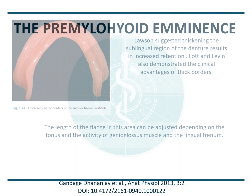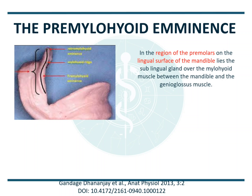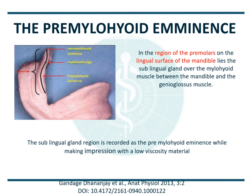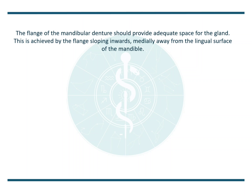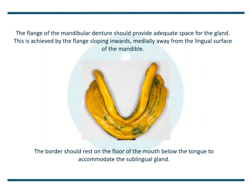Next is the pre-mylohyoid eminence. In the region of the premolars, on the lingual surface of the mandible, lies the sublingual gland over the mylohyoid muscle between the mandible and the genioglossus muscle. The sublingual gland region is recorded as the pre-mylohyoid eminence while making an impression with a low-viscosity material. The flange of the mandibular denture should provide adequate space for this gland, achieved by the flange sloping inwards medially away from the lingual surface of the mandible. The border should rest on the floor of the mouth below the tongue to accommodate the sublingual gland.